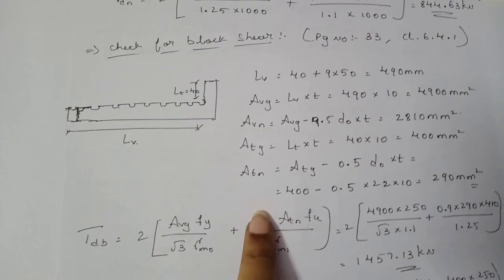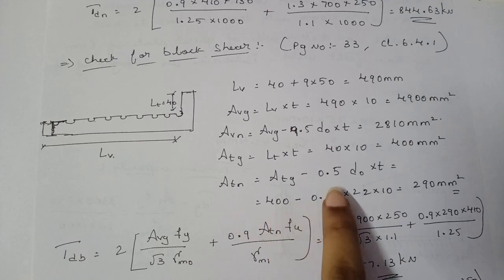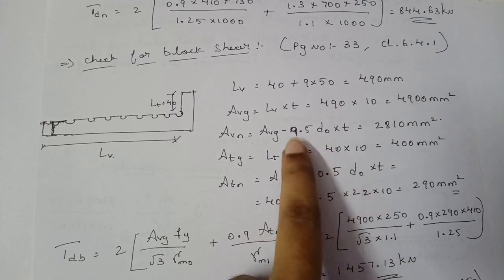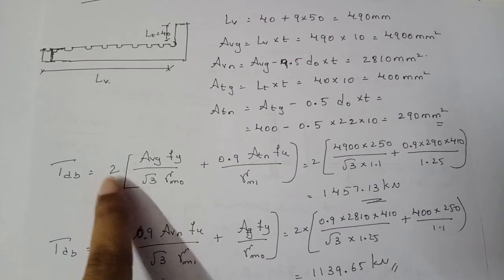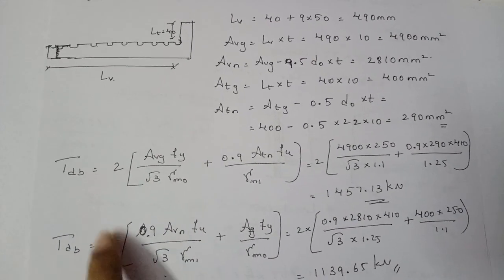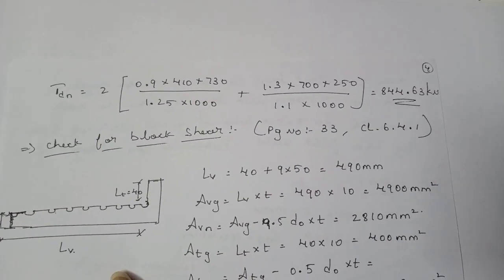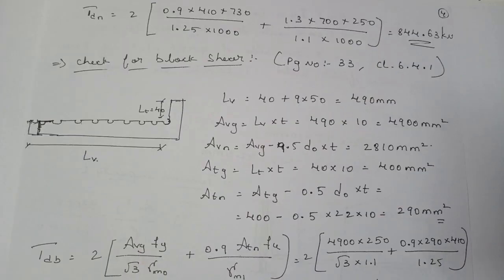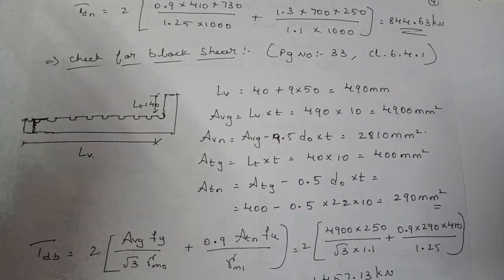For a detailed understanding of how the 0.9 factor and other values are derived, refer to the previous video. The only difference between single and double angle section design is multiplying the entire equation by 2 for the double angle, and obtaining the w1 value of 40 mm from the steel table. That is the complete design of a double angle section tie member.